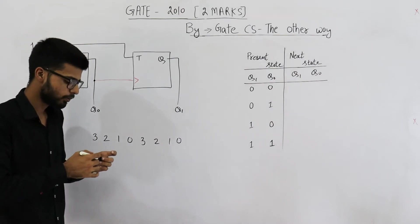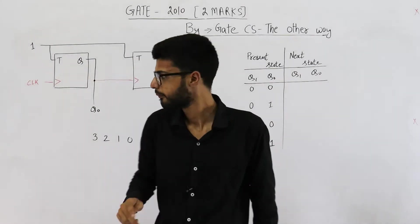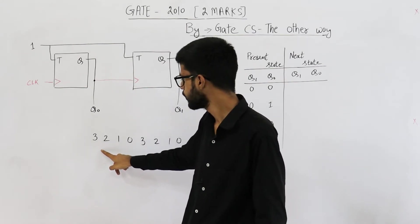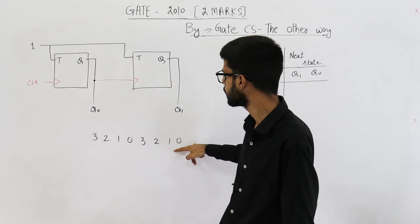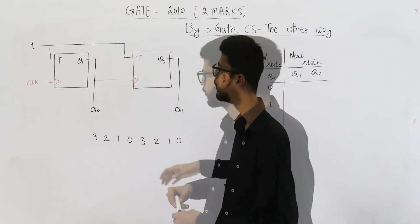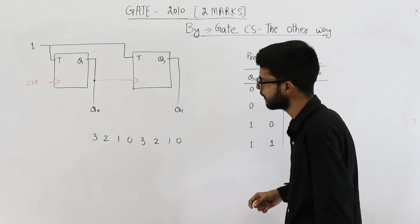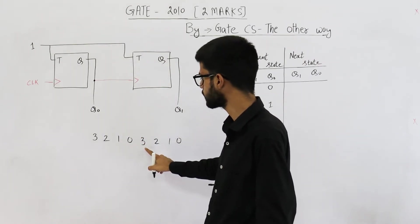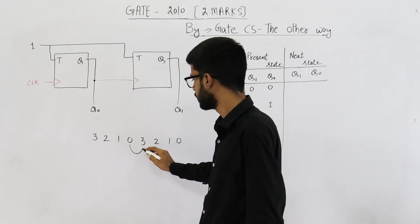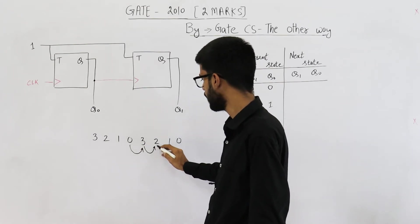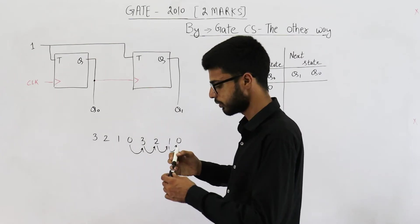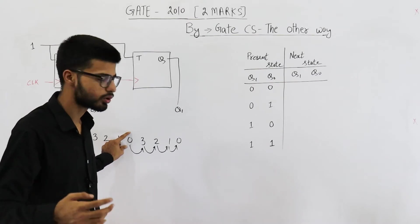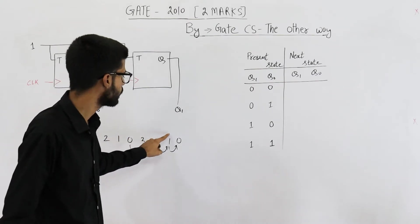The maximum possible value with two bits is 3. So we start from the maximum value and go till zero, and this keeps on happening. In this question, the starting state is zero. If you start from zero, the next state will be 3, then 2, then 1, then again zero. They are asking: if we start from zero, what are the next four states? They are 3, 2, 1, 0.